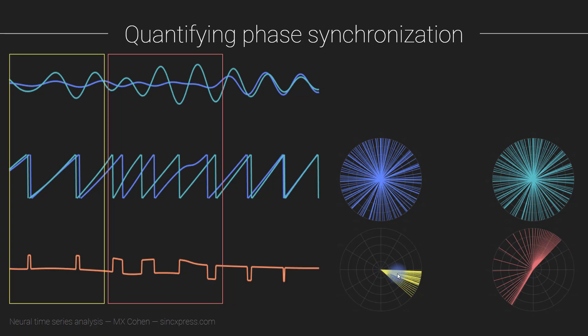The next step is to compute the average of all of these vectors. Remember, these vectors are difference vectors, these are difference phase angles. So you compute the average vector here, the average vector here. This average vector is going to be really long, maybe it's like 0.9 or something.